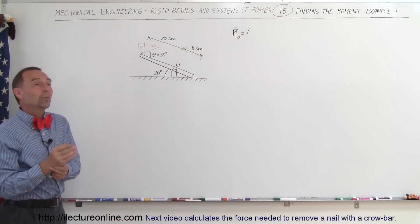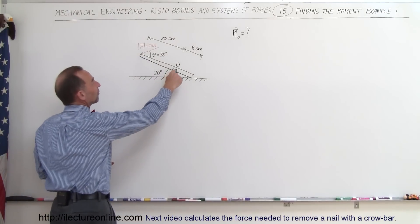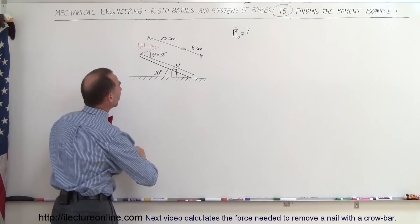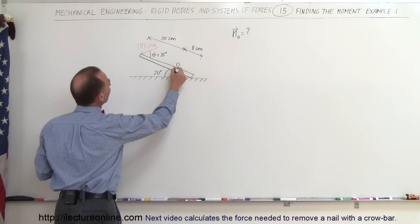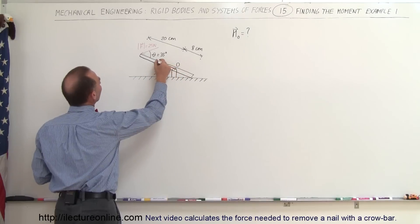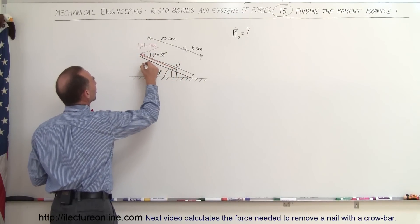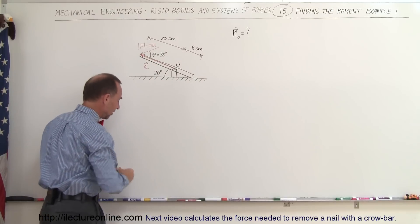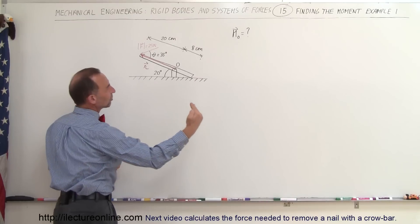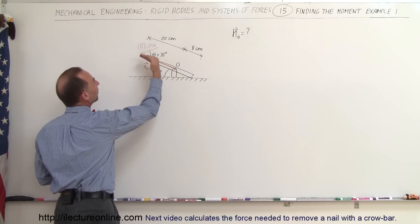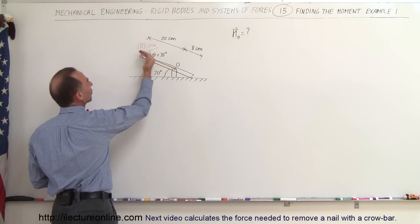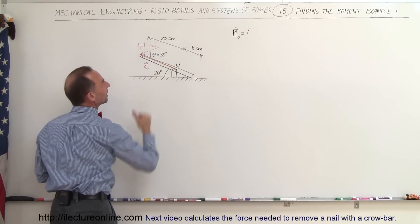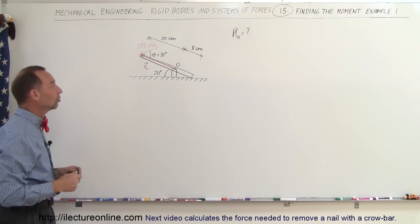First, the direction of the moment, which will act at this pivot point. We need to find the moment arm, or the position vector from the point of rotation to the line of action of the force. There's the position vector R. We know that the magnitude of R is 20 centimeters. If you point your fingers in the direction of the moment arm and curl them in the direction of the force, the moment is out of the board.